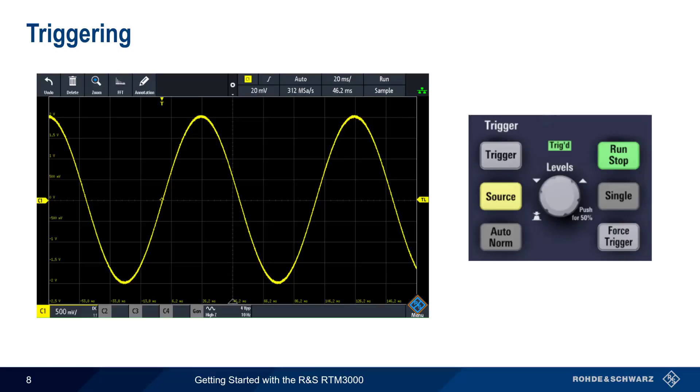Next let's talk about triggering. Recall that there are many different types of triggering. In this presentation, we're going to be using the most basic, but also the most common form of triggering, namely edge triggering. For edge triggering, we define a trigger level using the Trigger Level knob. Current trigger level is indicated by a TL flag on the right edge of the screen and is also shown numerically at the top of the screen.